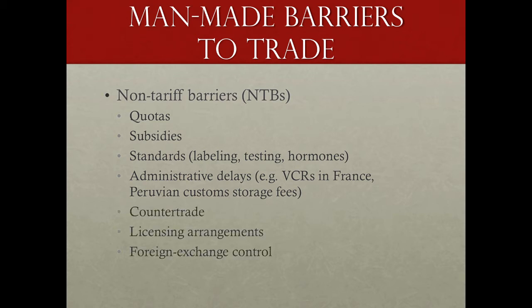There are a number of other measures that can be used as trade barriers that are not tariffs, most having to do with currency rules and the ability to obtain foreign currency. Almost any international trade transaction has a corresponding currency trade to back it up. If currency is not tradable or there are limitations on its use, that serves as a barrier to trade. Counter-trade, licensing arrangements, and foreign exchange controls are all mechanisms to limit imports, and in most cases also to help preserve the value of the currency.